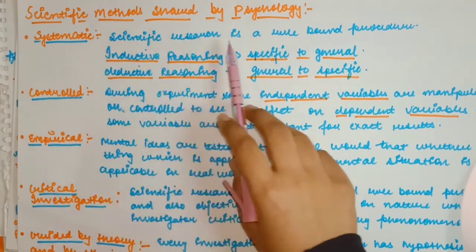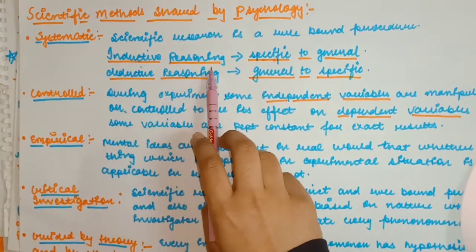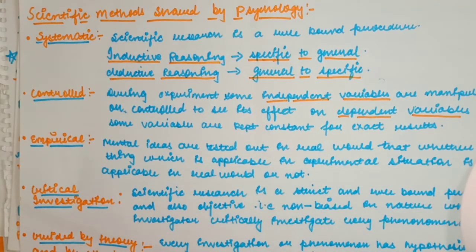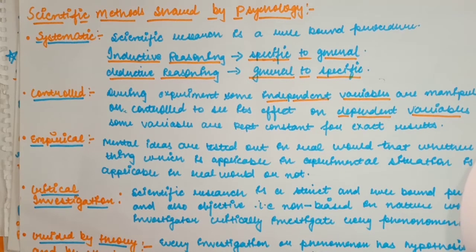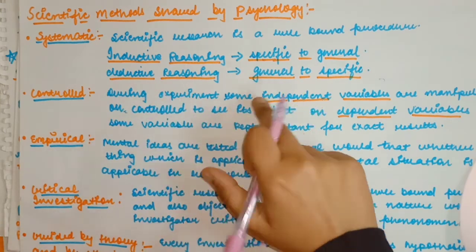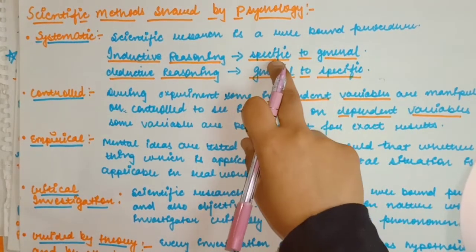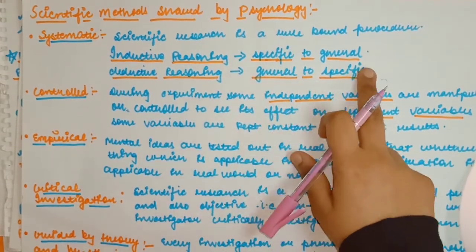There are two important things: inductive reasoning and deductive reasoning. Inductive reasoning means from specific to general, and deductive reasoning is from general to specific. For example, if a painkiller reduces pain for one person, obviously it will reduce pain for others too — that is specific to general. And if it works for all, it will work for one individual as well — general to specific.